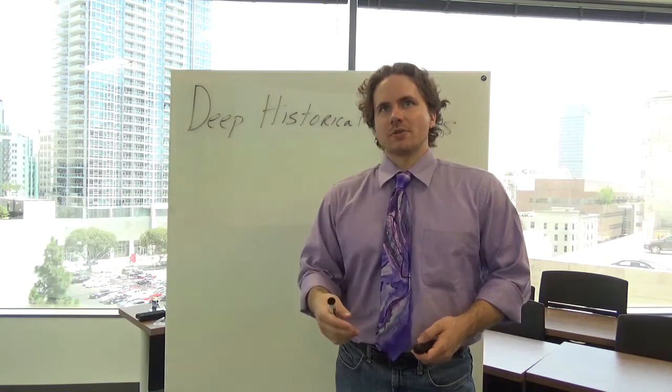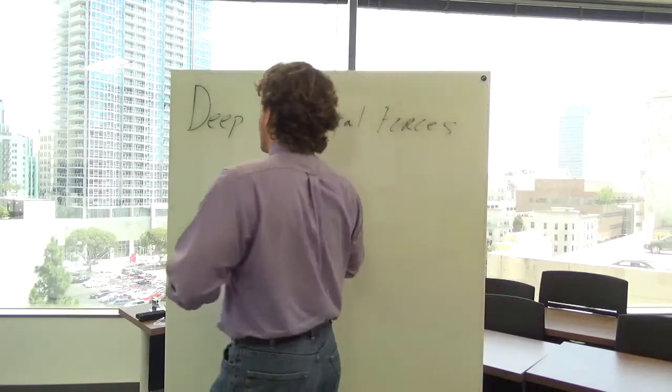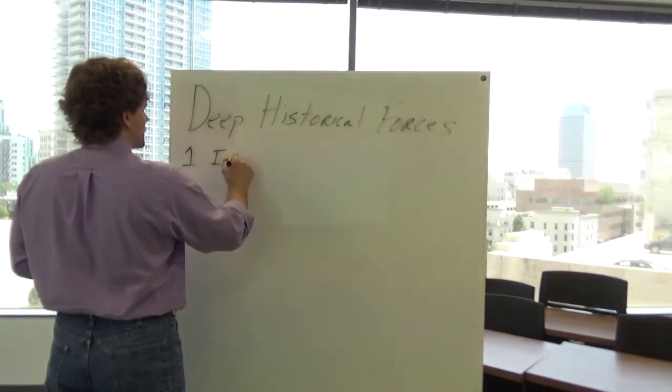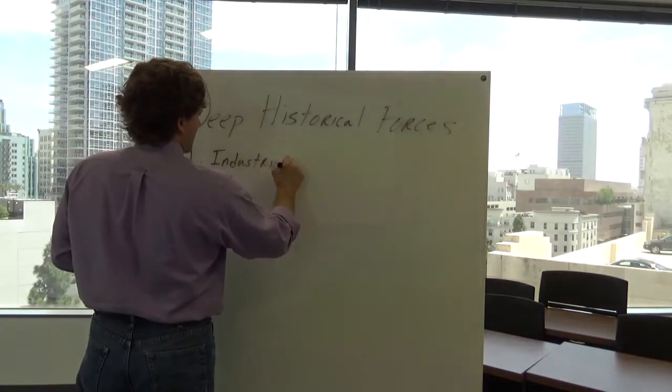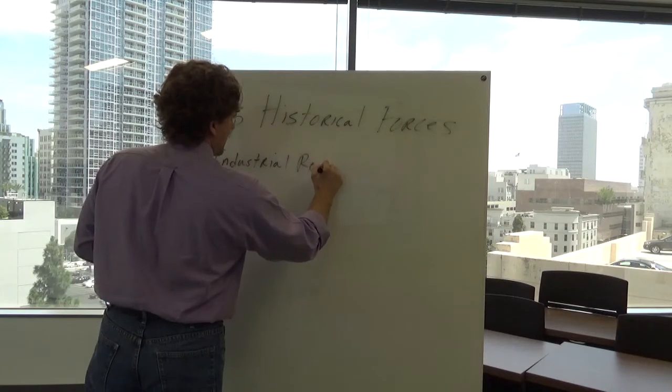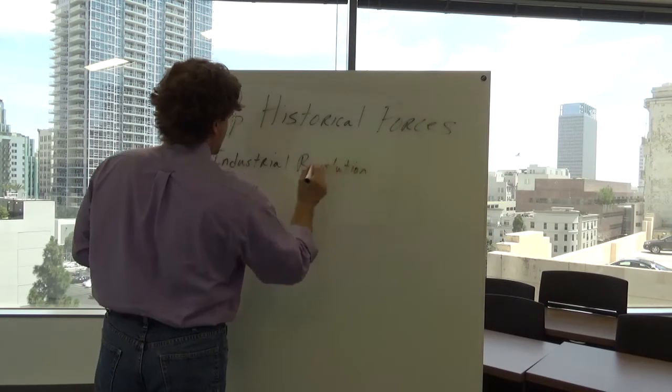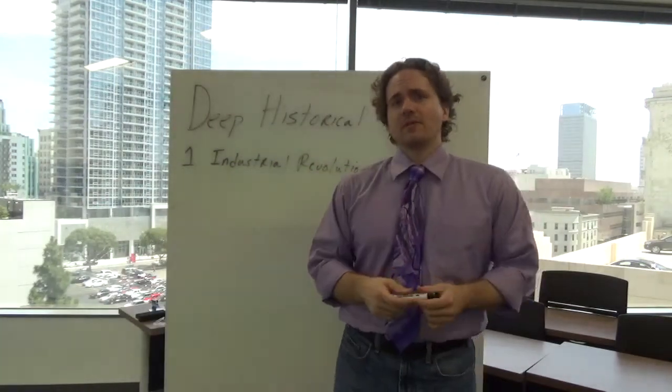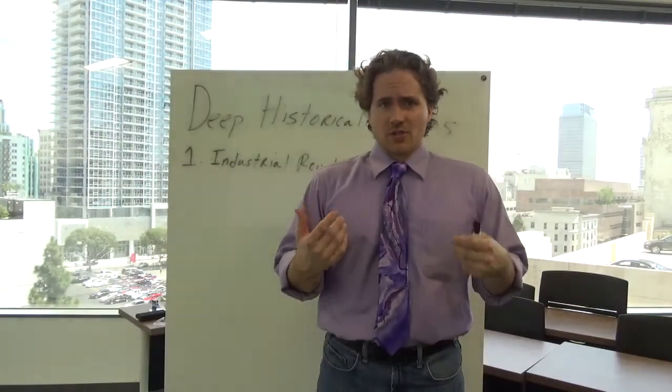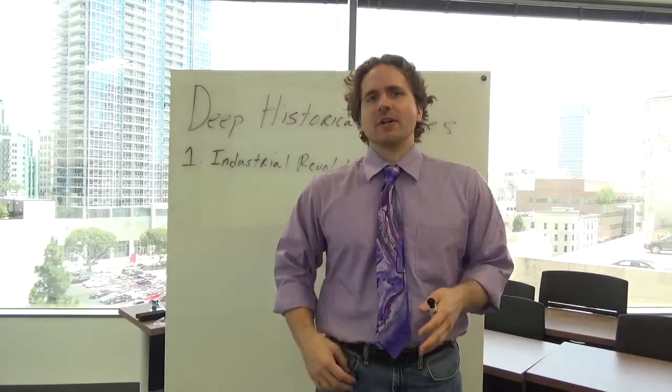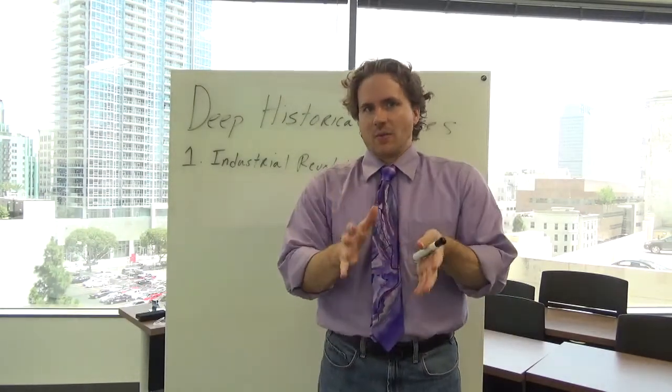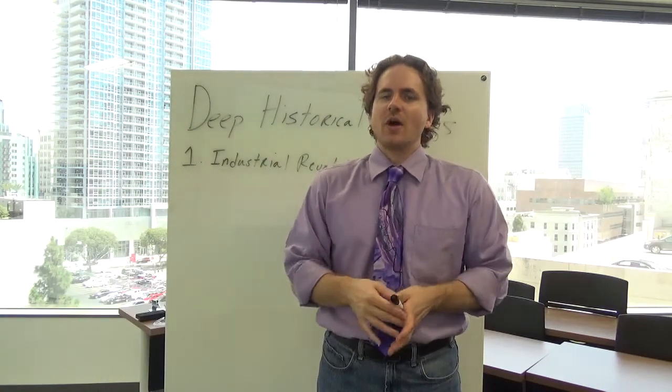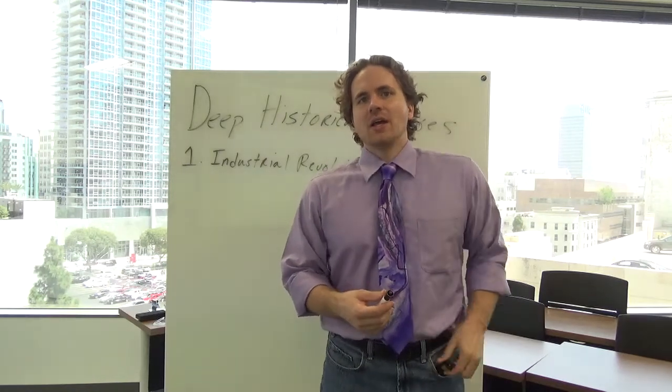The first one we're going to talk about is the Industrial Revolution. The Industrial Revolution basically turned agrarian economies into industrialized economies. Typically we think of the Industrial Revolution as something that started in England sometime around the 1600s to 1700s. It's not like there's an exact date. It was a culmination of a variety of economic, social, and political changes that occurred.